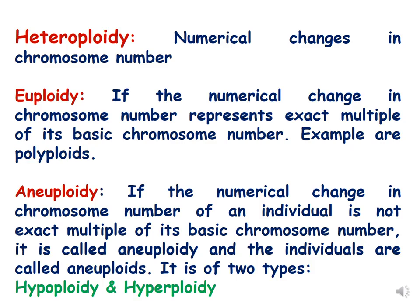As per definition, heteroploidy is when numerical changes in chromosome number are represented by euploidy and aneuploidy. Euploidy is when the numerical changes in chromosome number represent an exact multiple of the basic chromosome number, and aneuploidy is when the numerical changes are not an exact multiple of the diploid chromosome number.